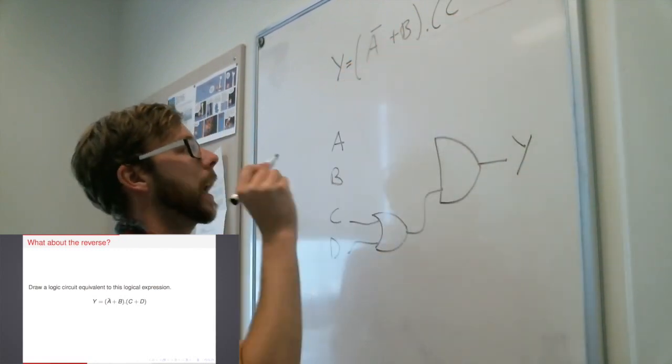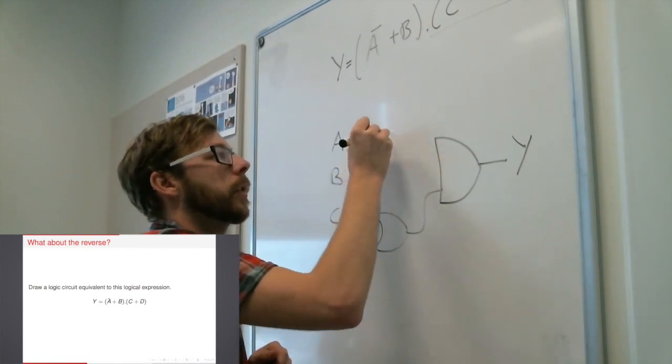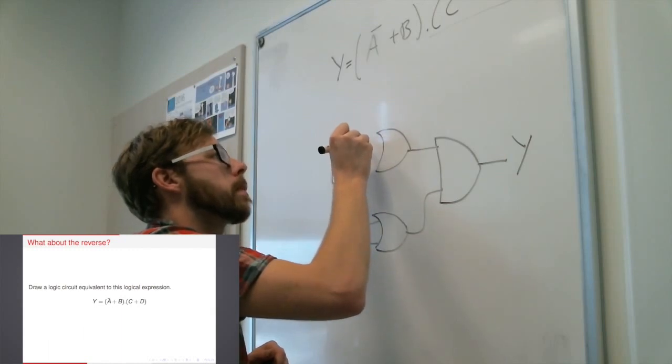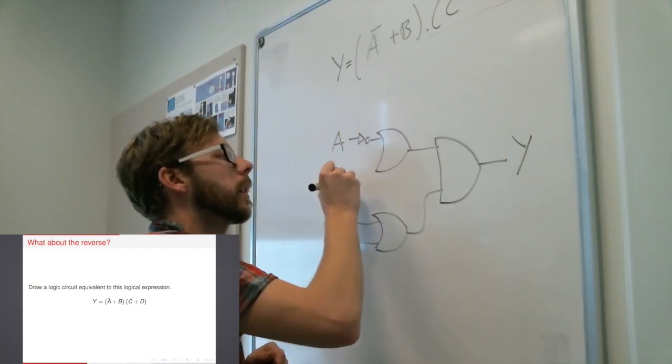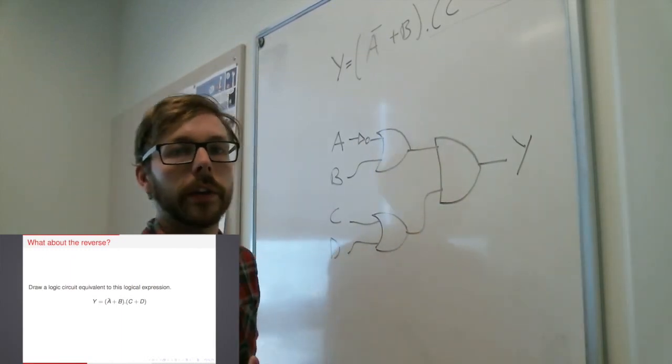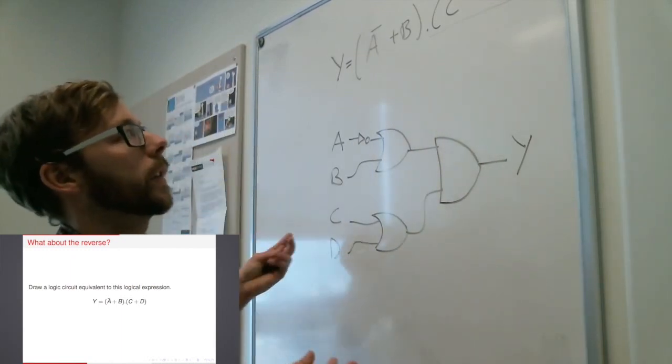And then my NOT A and B, I'm going to do another OR gate here. This one goes straight into there. Not A and B. And that's it. That's my whole logical expression equivalent to that.